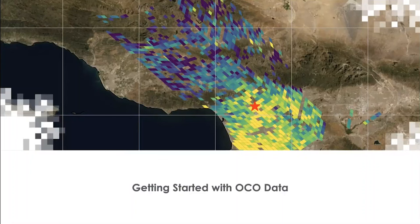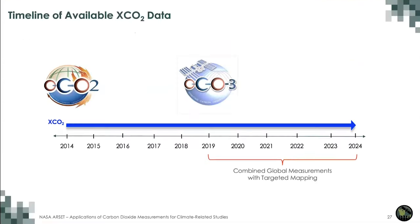Hello everyone. This is Karen Yuen, and I am going to do the first portion to help you get started with OCO data. Before we get started with the Python notebook demonstration, I would like to remind everyone about the availability timeline for both OCO2 and OCO3 products. OCO2 was launched in 2014, so we have a decade's worth of data, and OCO3 was launched in 2019 and we have five years' worth of data.